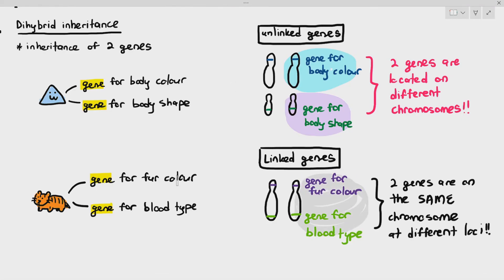The gene for fur color is at the top part of the chromosome and the gene for blood type is at the bottom part of the chromosome. They are within the same chromosome. If these two genes are within the same chromosome, these are referred to as linked genes.